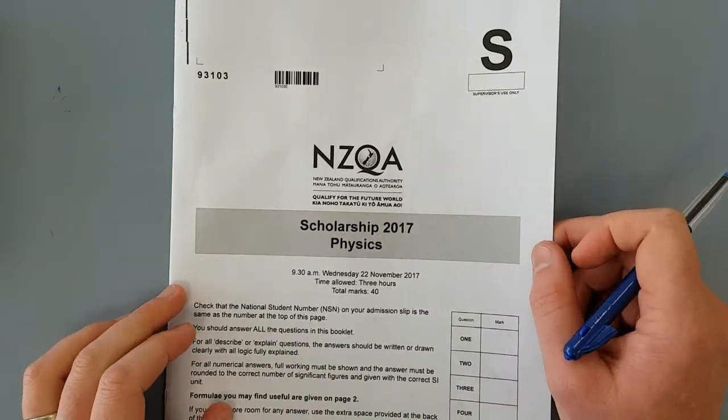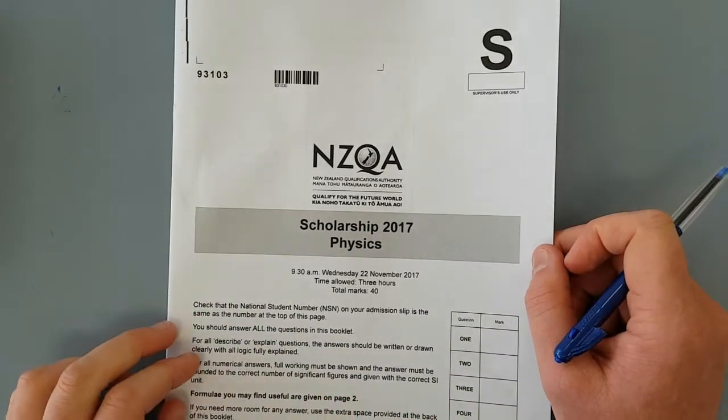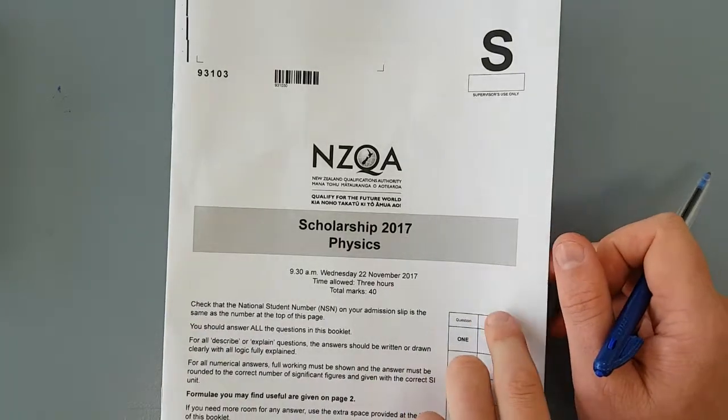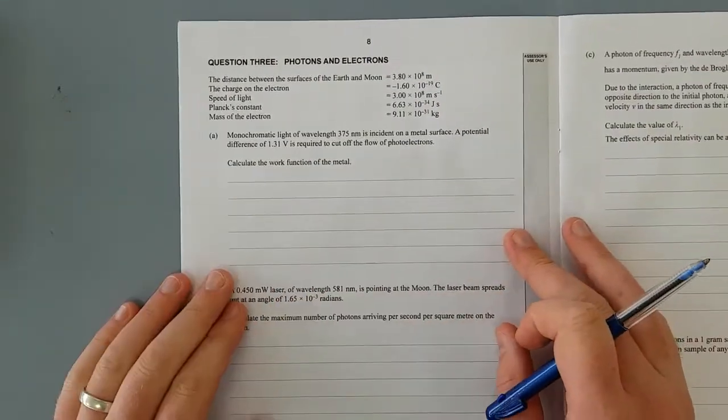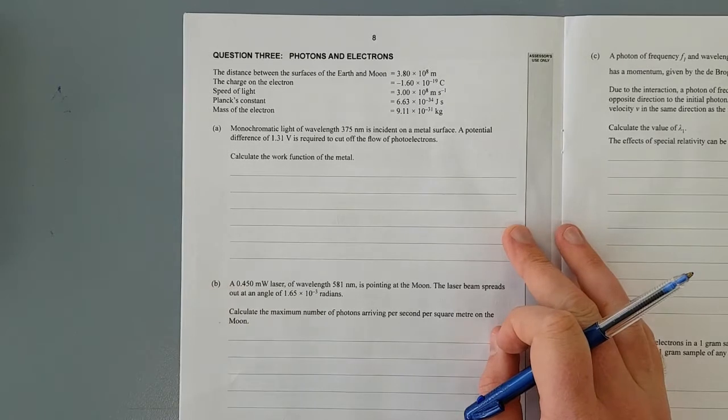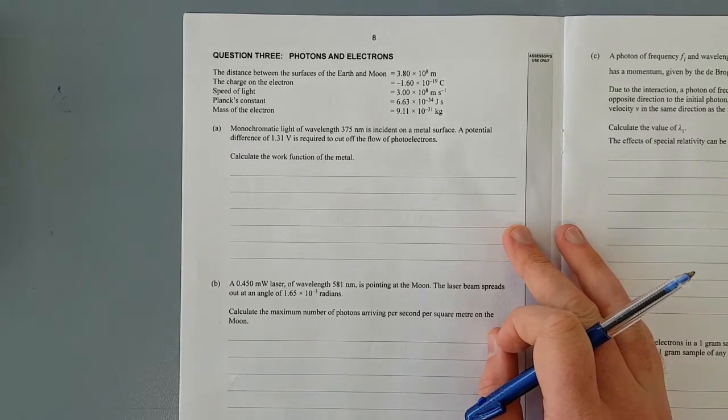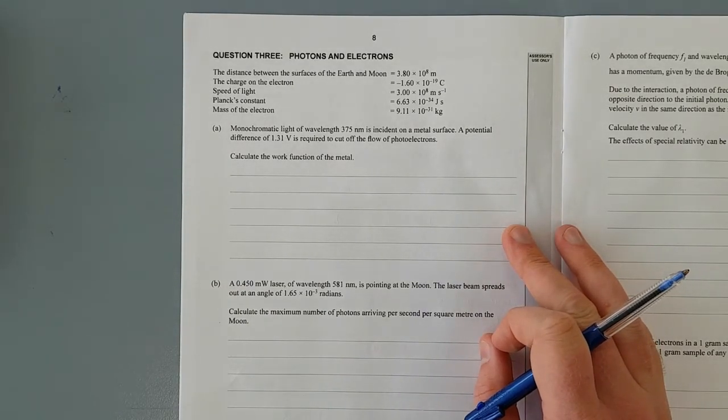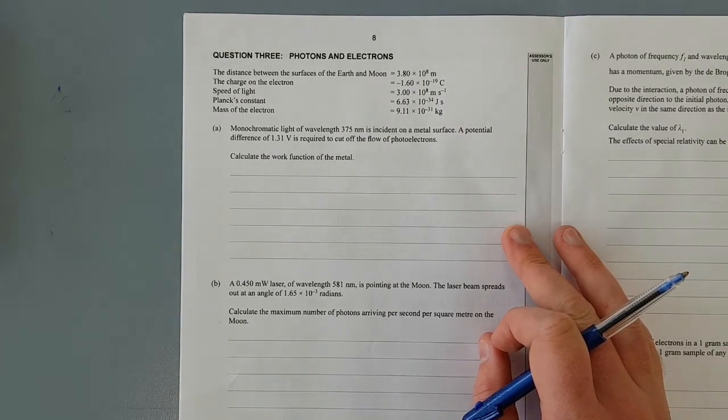For this video, I'll be working through question 3 of the 2017 scholarship exam. Question 3: Monochromatic light has a wavelength of 375 nanometers and is incident on a metal surface. Potential difference of 1.31 volts is required to cut off the flow of photoelectrons.